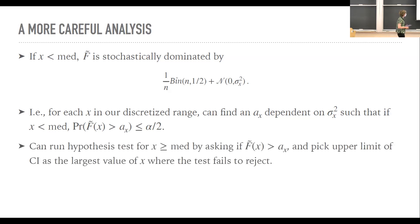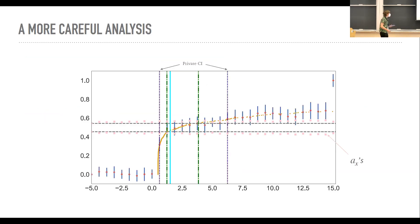So what we can do is we can essentially run a hypothesis test where we say, hey, for each X in our discretized range, is the CDF or the noisy CDF greater than this A sub X that we've calculated. And then we can pick our upper limit of our confidence interval accordingly as the largest value of X where the test fails to reject. And we can calculate the lower bound in the same way or analogously.